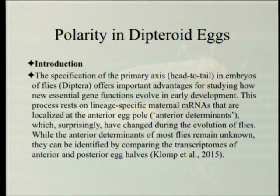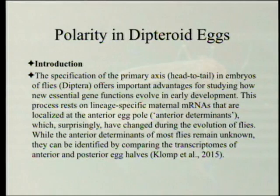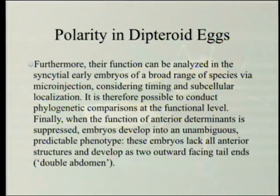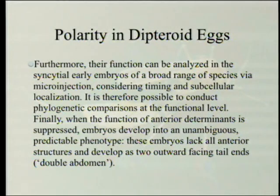While the anterior determinants of most flies remain unknown, they can be identified by comparing the transcriptomes of anterior and posterior egg halves — you cut the egg in two and see which messenger RNA is most populous in the head rather than the tail. Furthermore, their function can be analyzed in the syncytial early embryos of a broad range of species via microinjection, considering timing and subcellular location.